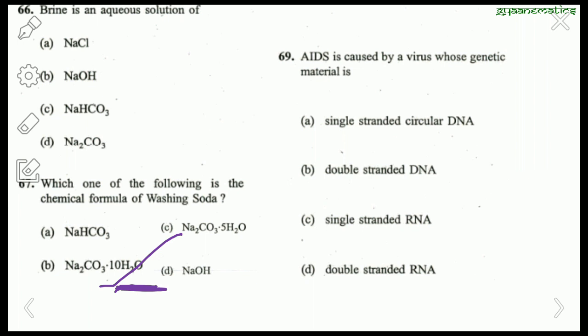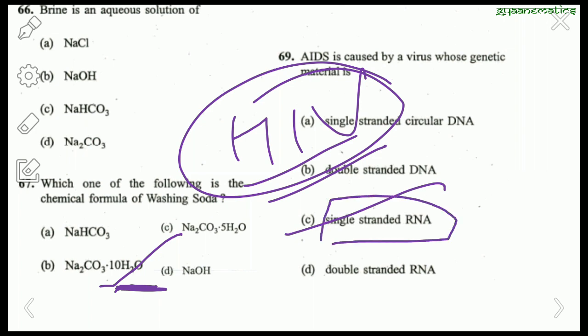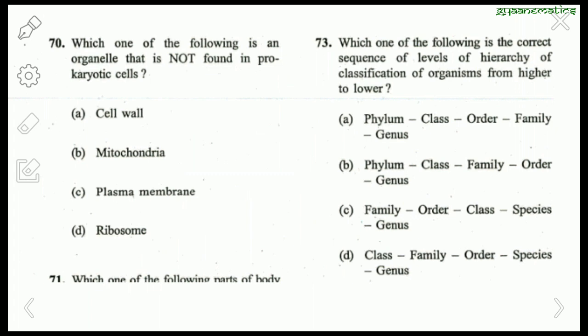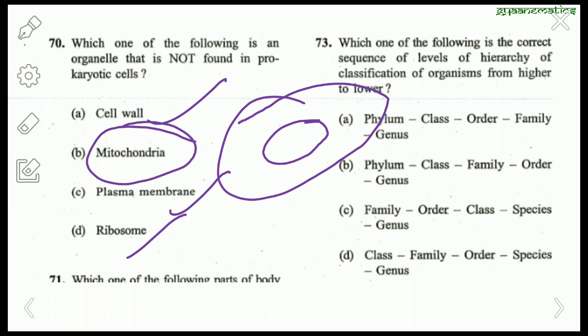Question 68: AIDS is caused by HIV, and the genetic material of HIV is single-stranded RNA — always remember this fact. Question 70: Which organelle is not found in prokaryotic cells? Prokaryotic cells lack a nucleus; they have a cell wall, plasma membrane, and ribosomes, but mitochondria is absent. So the right answer is mitochondria.